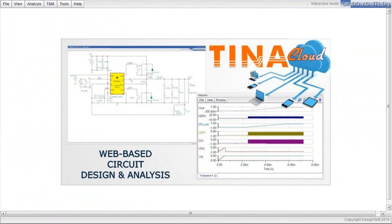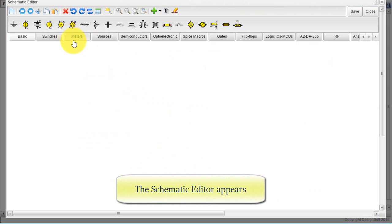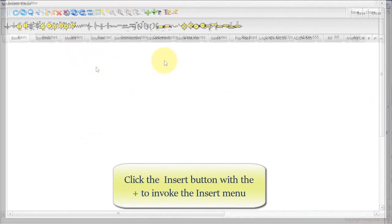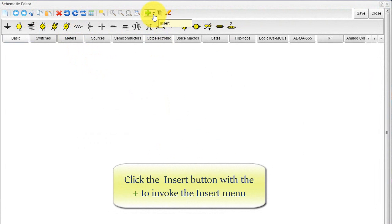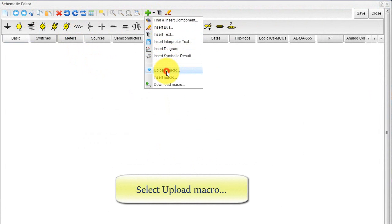Start Tina Cloud. To invoke the Schematic Editor, click the Tools menu. Select the Schematic Editor. The Schematic Editor appears. Click the Insert button with the green plus sign to invoke the Insert menu. Select Upload Macro.